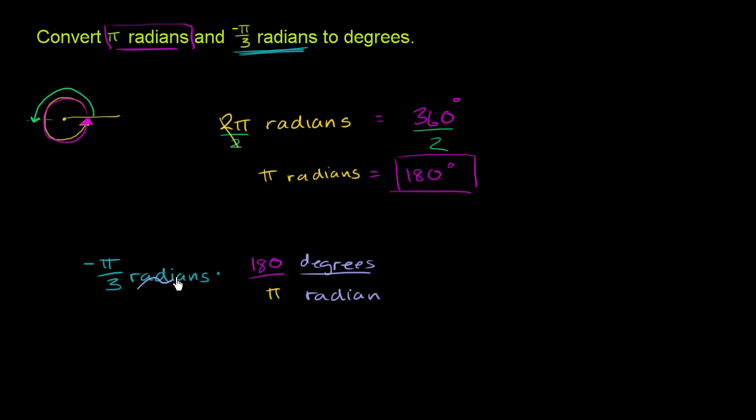The units are going to work out. The radians cancel out. The pi also cancels out. And 180, so you're left with negative 180 divided by 3. Leaving us with, what is that? Negative 60. Negative 60.